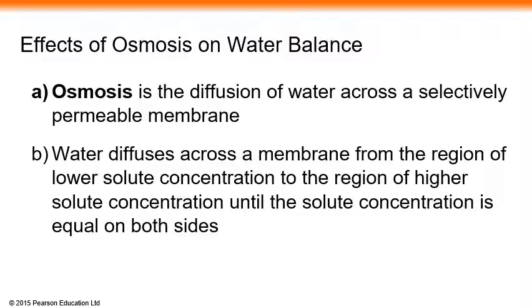As mentioned earlier, even though a water molecule is polar, its size is small enough to go through the biological membrane almost freely. The passive transport of water through the biological membrane is called osmosis. Osmosis is the diffusion of water across a selectively permeable membrane.